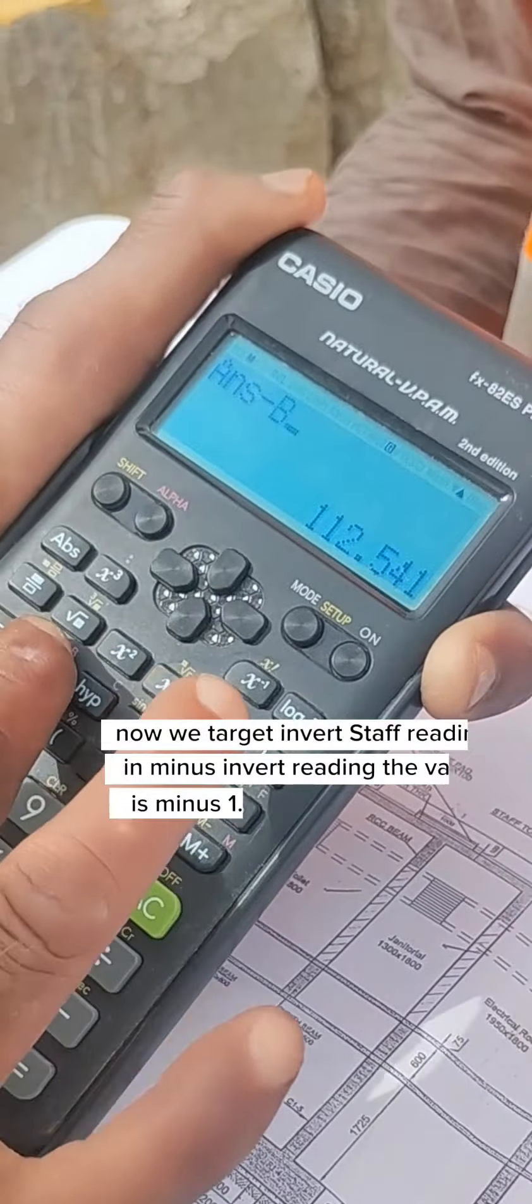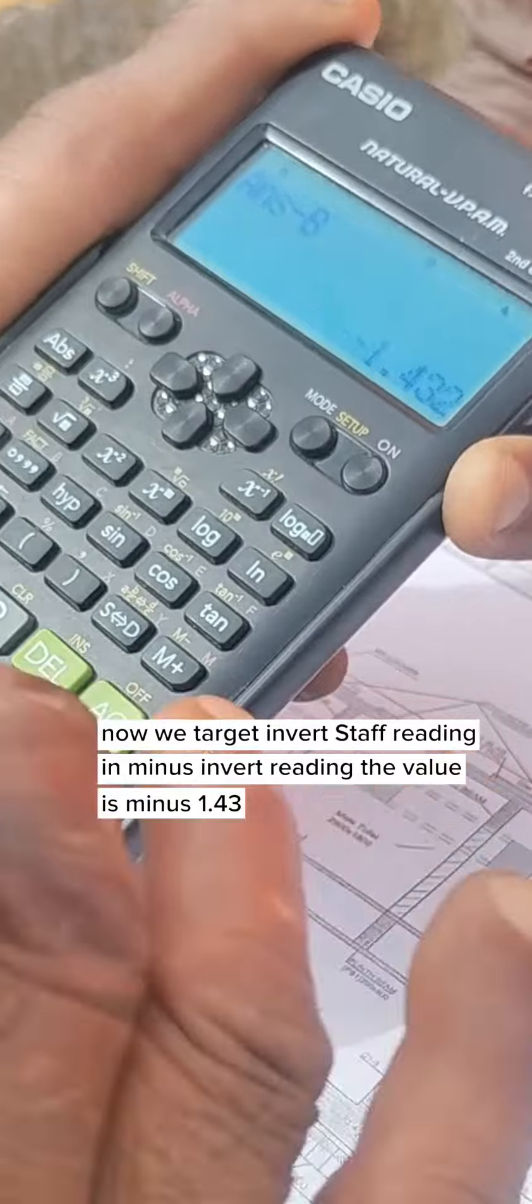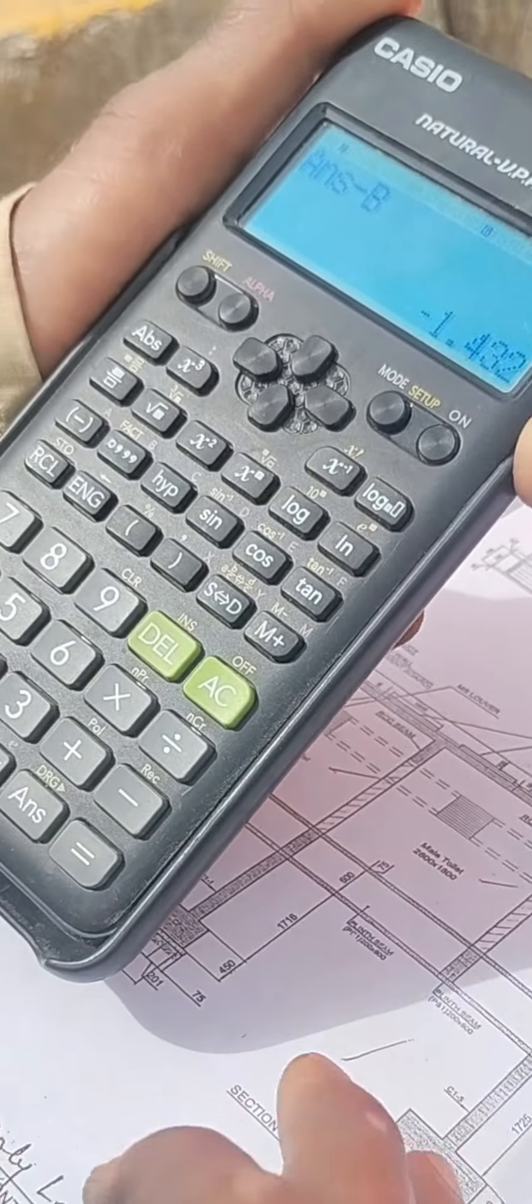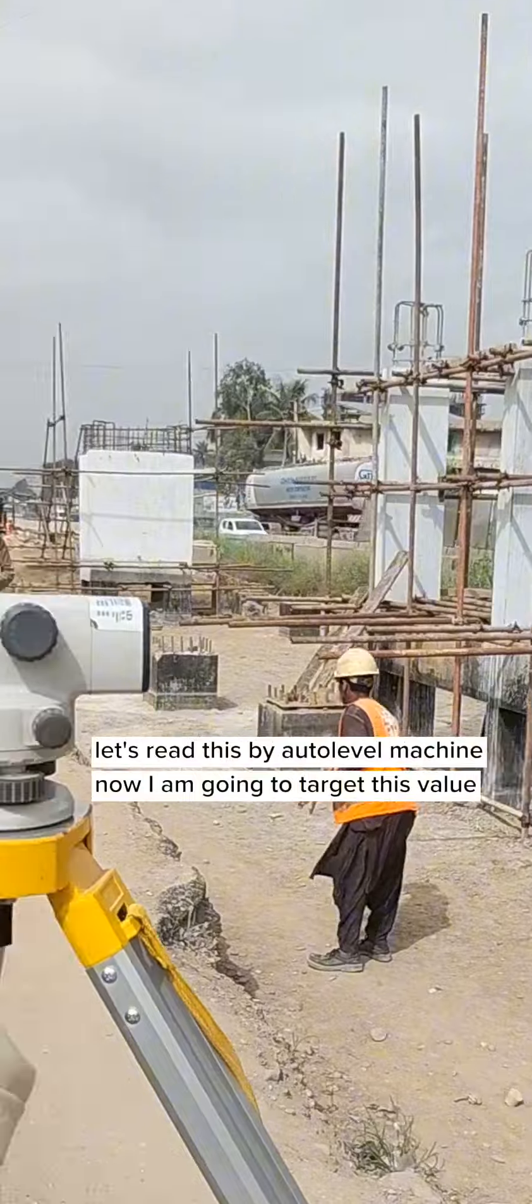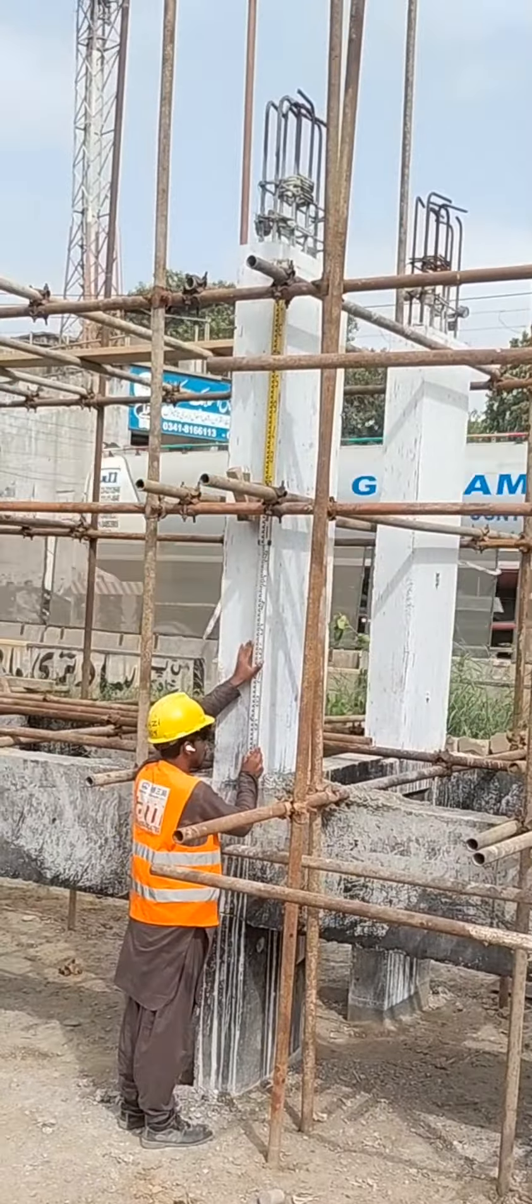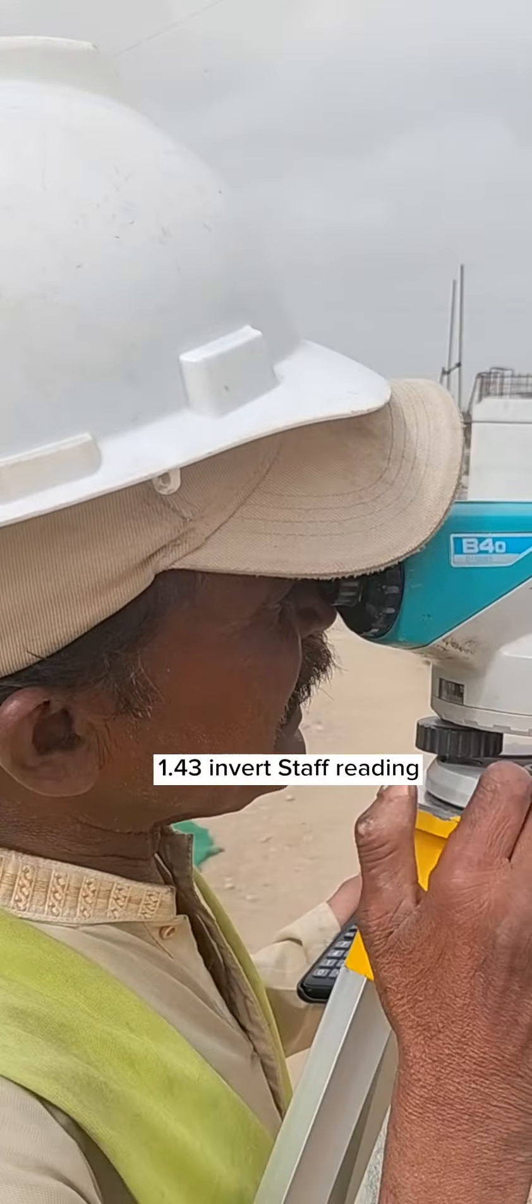Now we target InvertStaff reading in minus InvertReading, the value is minus 1.43. Let's read this by auto-level machine. Now I'm going to target this value, 1.43 InvertStaff reading.